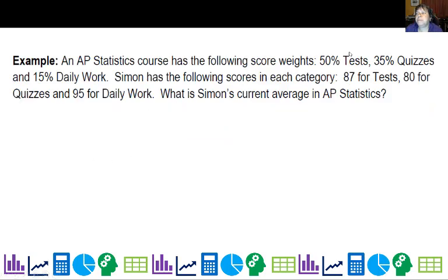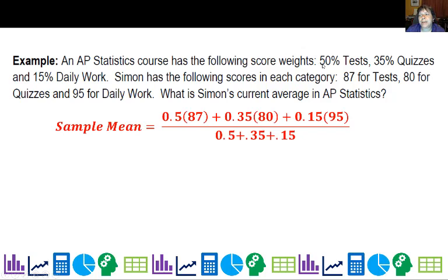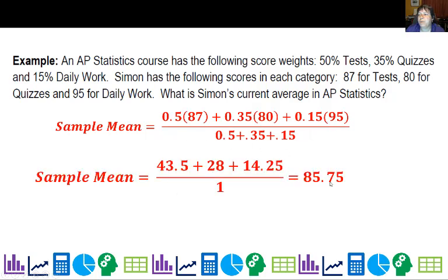In AP Stats, we have 50% tests, 35% quizzes, 15% daily work. Simon has the following scores: 87 for tests, 80 for quizzes, and 95 for daily work. What is his current average? I can take that 50% and multiply it by his test average, plus 35% times his quiz average, plus 15% times his daily work average. Then divide by the sum of the weights. These add up to one, and we would get 85.75.